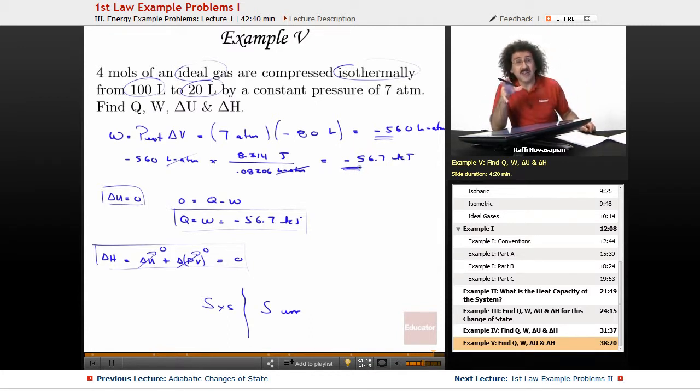The work done is actually negative. That means work is leaving the surroundings. 56.7 kilojoules is moving from the surroundings to the system as work. Heat minus 56.7 kilojoules. Heat is negative when it's leaving the system.